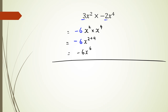Here's another quick example: if I have 3y to the power of 5 multiplied by 4y to the power of 3, all I need to do is look at the coefficients — that's these numbers here. So 3 times 4 is 12. I have y as the base, and the powers get added: 5 plus 3 is 8, giving y to the power of 8.